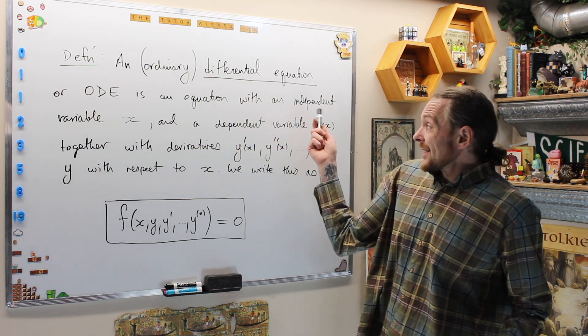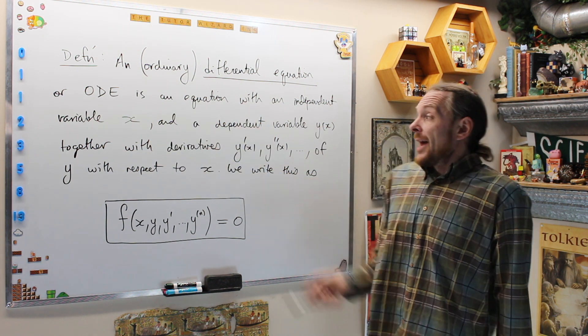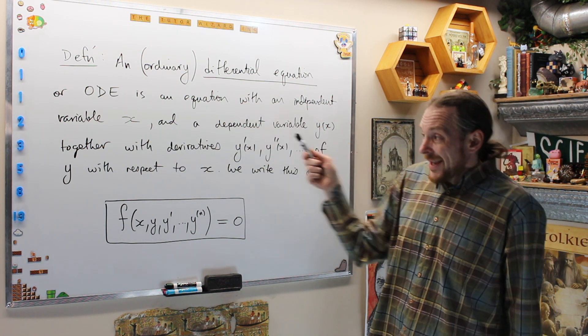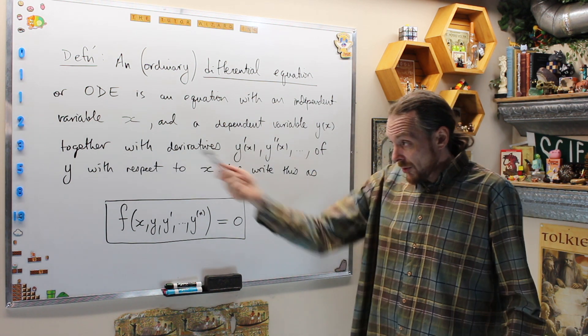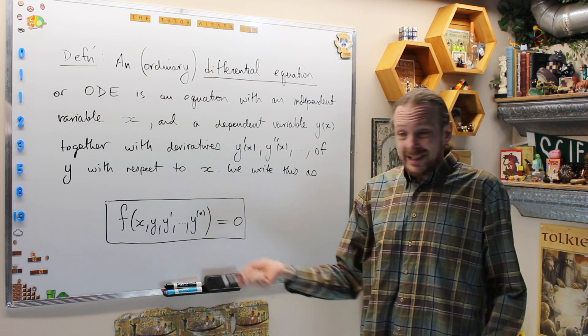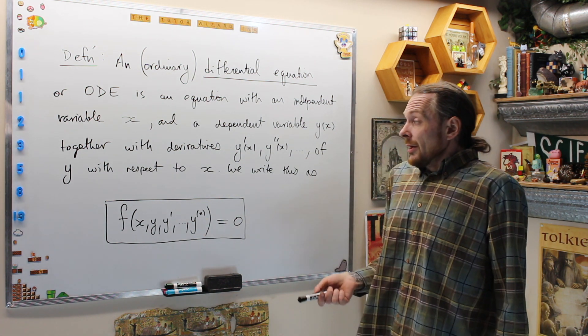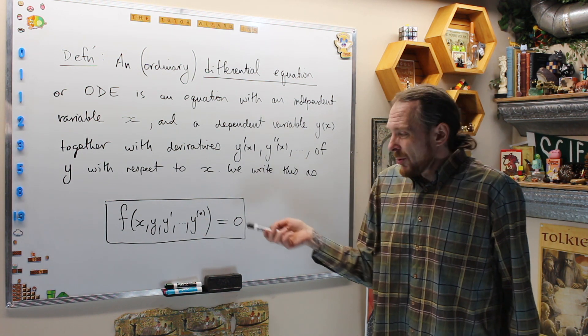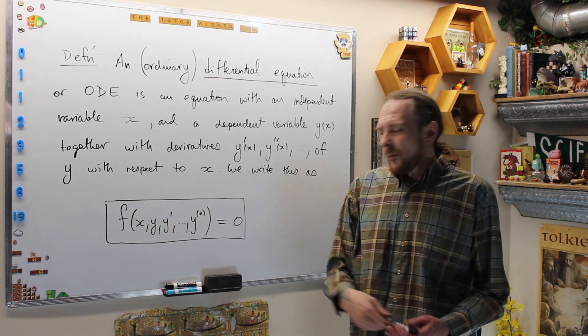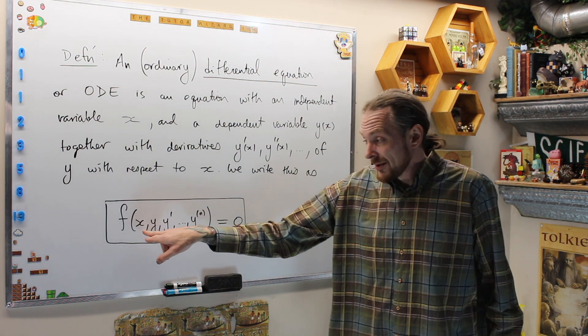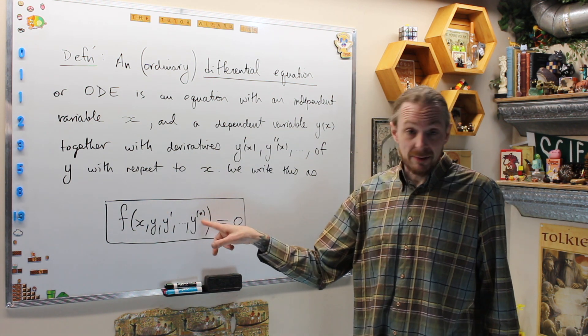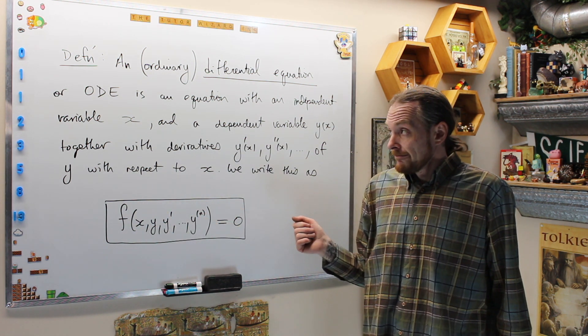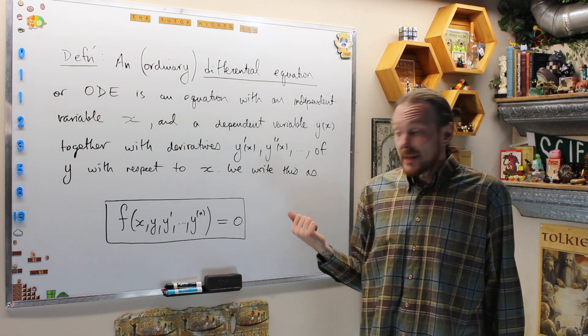It's an equation that has an independent variable X and a dependent variable Y of X together with some derivatives: Y prime, Y double prime, or possibly the nth derivative of that function Y. How we write that in general is we have some function which depends on the independent variable X and then Y, Y prime, up to possibly the nth derivative of Y.